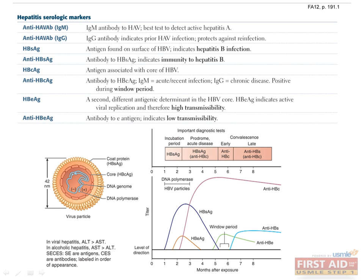Now let's move on to the markers for hepatitis B. Hepatitis B surface antigen is found on the hepatitis B virus. If you see hepatitis B surface antigen in a patient's blood, this indicates that the patient has a hepatitis B infection. If the patient has antibodies against the hepatitis B surface antigen, the patient has immunity against hepatitis B — either through vaccination or by recovering from the infection.